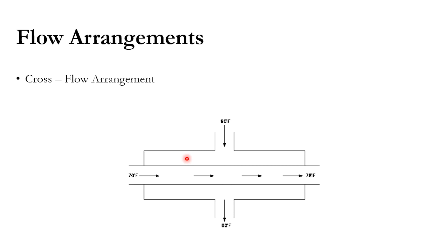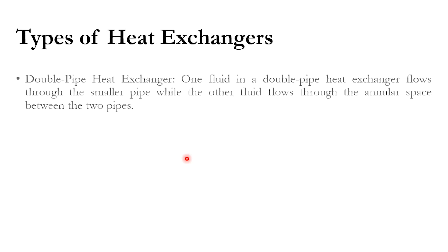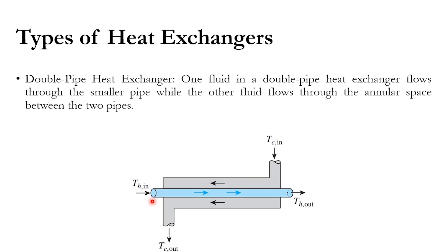The first type of heat exchanger we will discuss is the double pipe heat exchanger. In this design, one fluid flows through the inner smaller pipe — for example, the hot fluid enters at temperature Th_in and exits at Th_out — while the cold fluid flows through the annular space between the two pipes, entering at Tc_in and leaving at Tc_out. This is typically arranged in counter flow configuration.